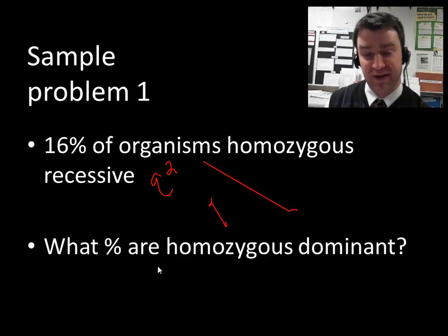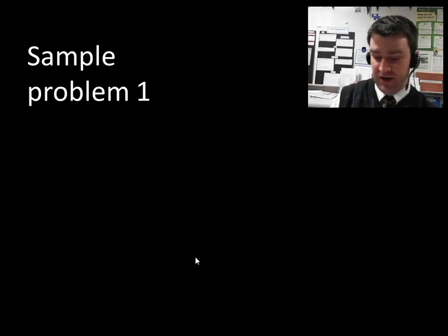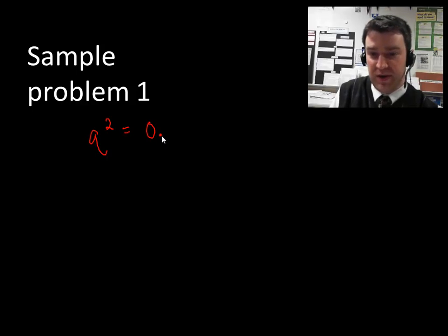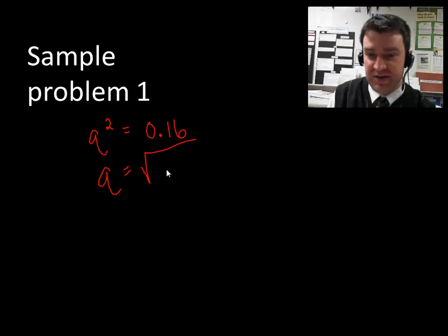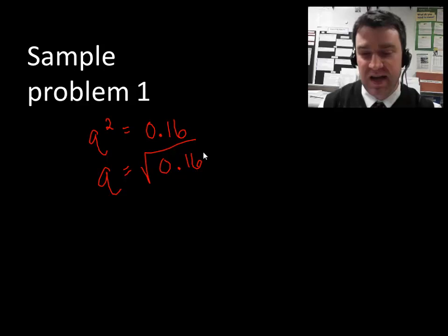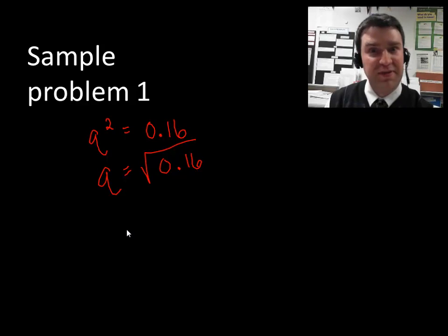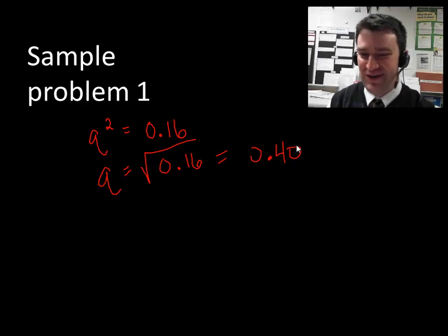So we're given q squared, and what are we trying to find? We're trying to find what percent of organisms are homozygous dominant. That would be the term p squared. So ultimately, we're given q squared, and we'd like to get to p squared. So how can we do that? Well, if we know that q squared is equal to 16%, and again, we don't want to write it in terms of a percentage, we want to write it in decimal form. We can start there. We know that q squared is equal to 0.16. So what can we do with that term? Well, we could square root it. So we know that q would simply be the square root of 0.16. As it turns out, that is actually a perfect square in decimals, but you are allowed to use a calculator now on the AP Biology test. So please put that in your calculator if you're not sure. As it turns out, the square root of 0.16 is 0.40, not 0.04.